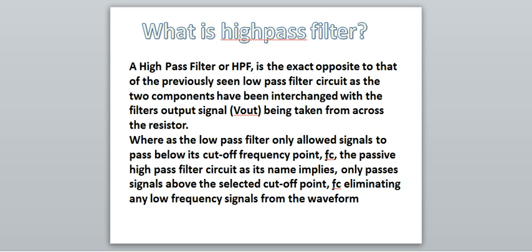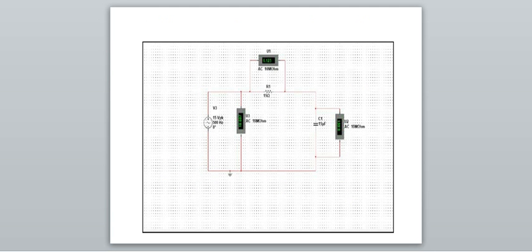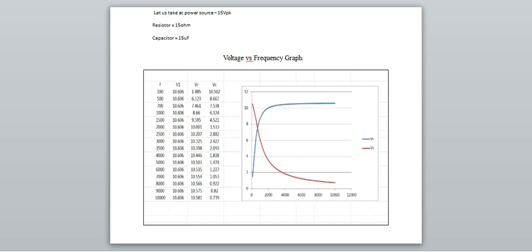Working on this in Multisim, we present a simulated image screenshot. Then comes the graph of voltage versus frequency, which includes a power source of 15 volts VPK, a resistor of 15 ohms, and a capacitor of 15 micro-farads. The graph shown corresponds to this configuration.